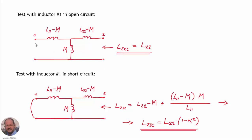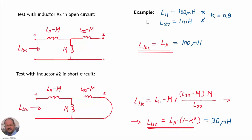We can do the same from the side of inductor 2. With inductor 1 open, we measure L22 from terminal 2. With terminal 1 in short circuit, we measure the self-inductance of inductor 2 times one minus the coupling coefficient squared.